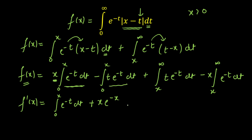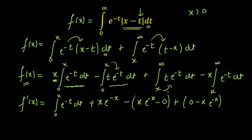Continuing, I differentiate the second term: minus times the derivative of the integral from 0 to x of t·e^(-t) dt gives minus x·e^(-x). Next, applying product rule on the x times integral from x to infinity of e^(-t) dt: differentiating x gives 1, yielding minus integral from x to infinity of e^(-t) dt. Then applying Leibniz on that integral: for the upper limit infinity the contribution is 0, and for x I get minus x·e^(-x), so minus x times (minus e^(-x)).